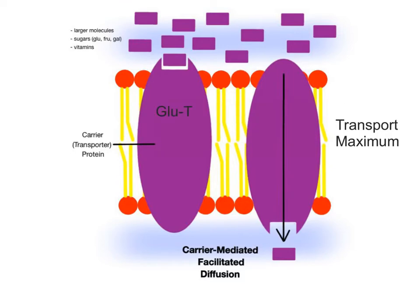One important example of carrier-mediated facilitated diffusion involves glucose. This process uses specific integral proteins called glucose transporters, or GLUT proteins, that are specialized to bind to glucose molecules outside the cell. So, when we digest food, our blood glucose levels rise, and we need to transport glucose into cells to make ATP using mitochondria.